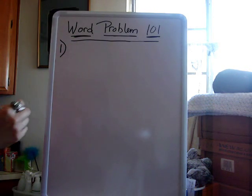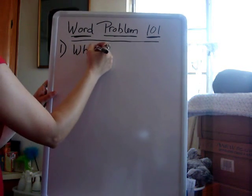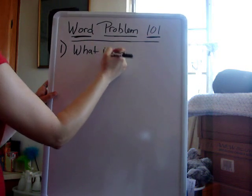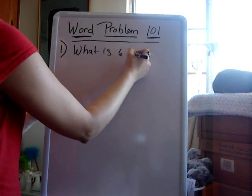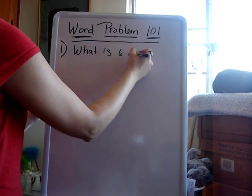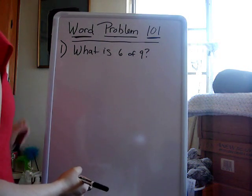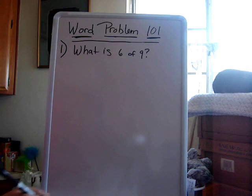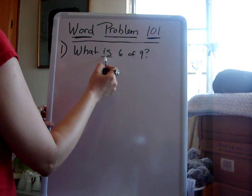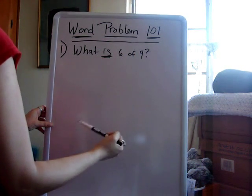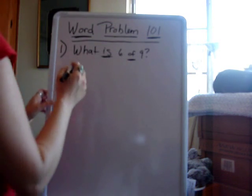We're going to write a problem on the board. We're going to start with something simple, because every word problem — at the end of it, no matter how long — I ask these questions: 'What is blank of blank?' In this case, what is six of nine?